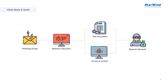Ransomware variants typically select files cautiously to ensure system stability. In addition, some variants take steps to delete backups and shadow copies of files, preventing recovery without the decryption key.